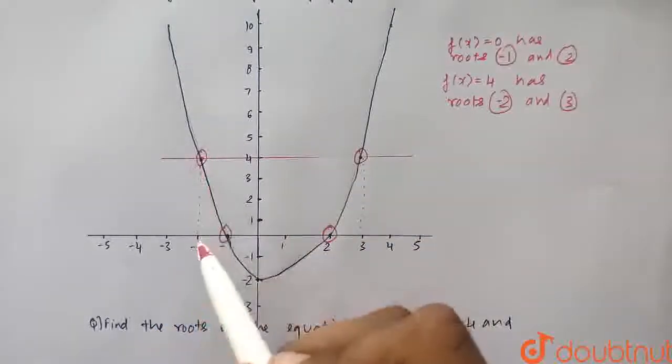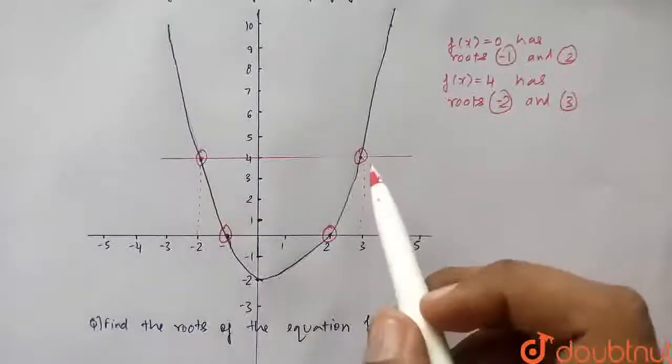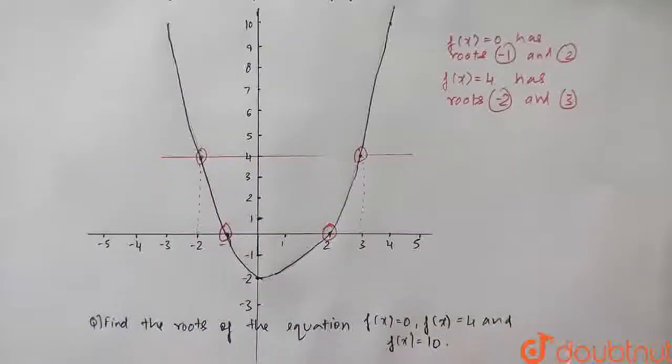The way I did here was, minus 2 and 3, as they plotted in the graph. Now, similarly, f of x is equal to 10.